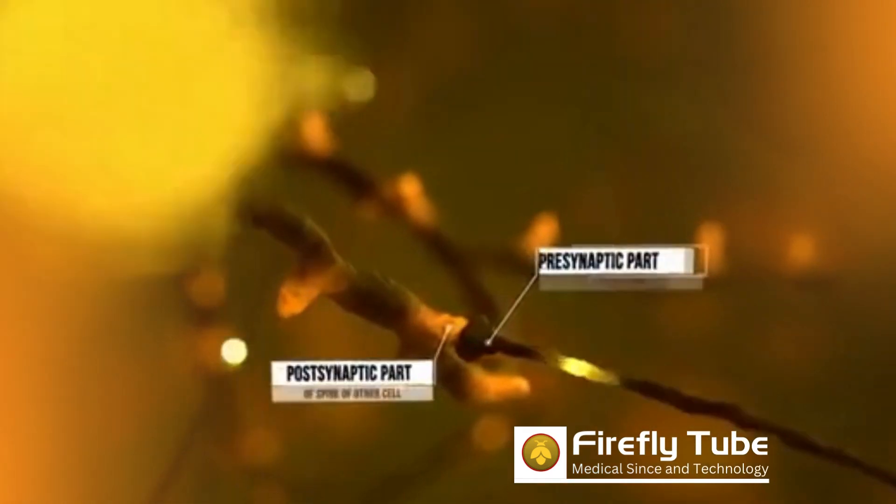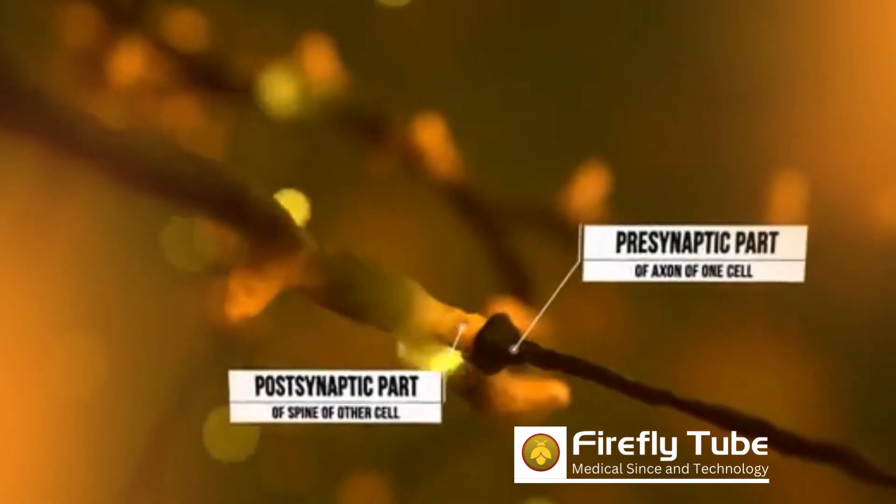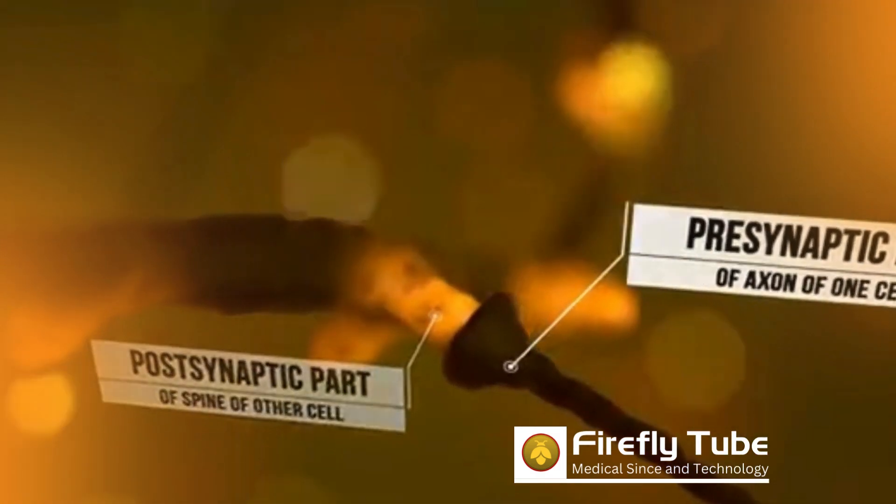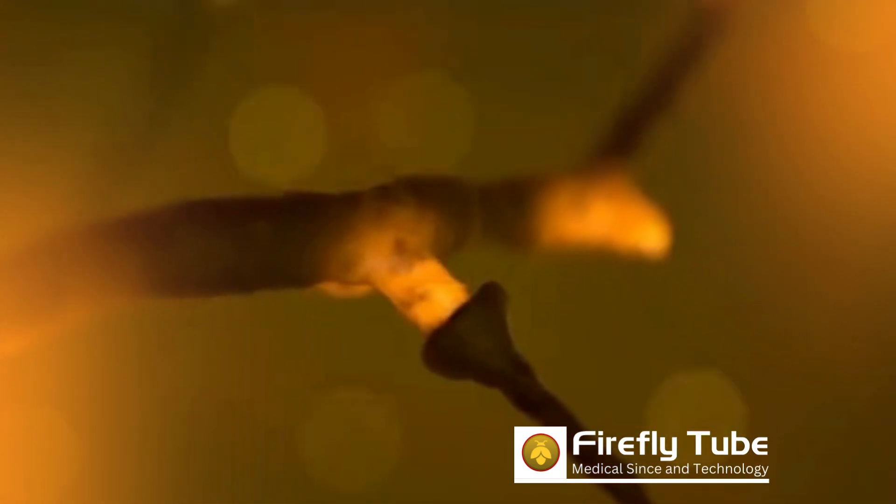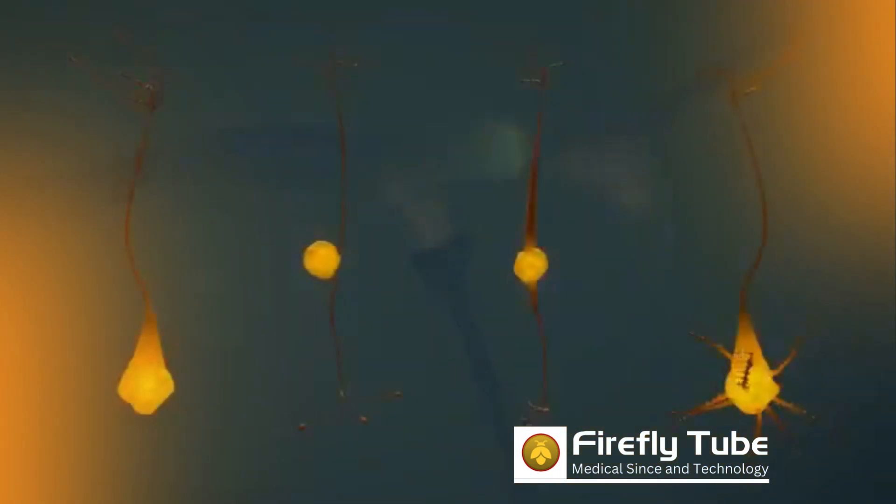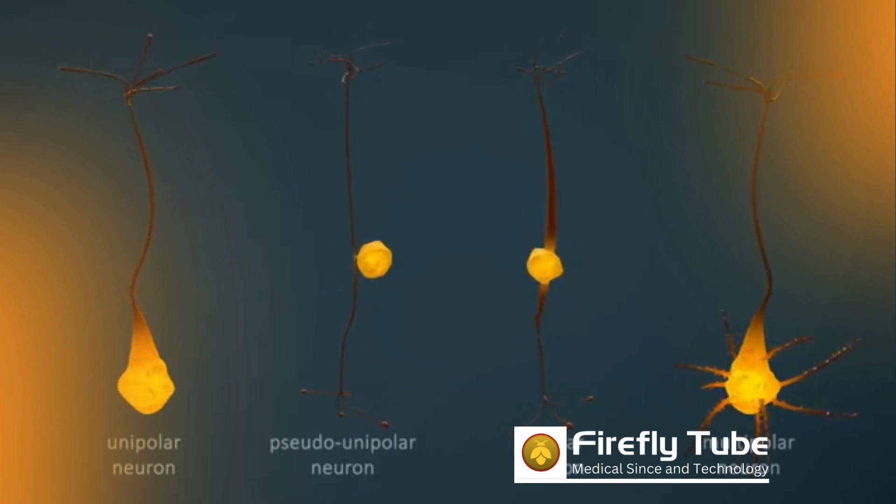A synapse consists of a presynaptic part, a postsynaptic part, and a small gap between the two. Although the general structure is always the same, there are numerous forms that nerve cells can take. Nerve cells are usually divided into the types shown here.